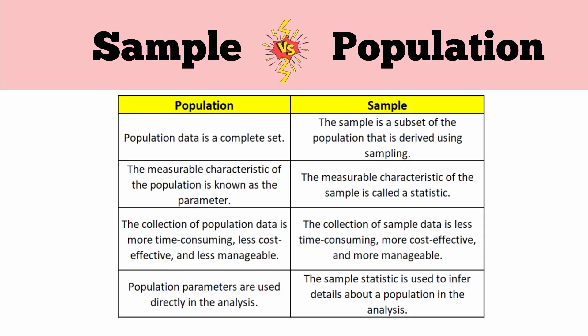Moving on to population versus sample. First, population data is a complete set while a sample is a subset derived using sampling. Second, the measurable characteristic of a population is known as a parameter, while the measurable characteristic of a sample is called a statistic. Third, collection of population data is more time consuming, less cost effective, and less manageable, while sample data collection is the opposite. Finally, population parameters are used directly in analysis, while sample statistics are used to infer details about the population.